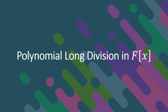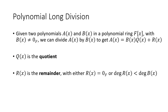This video reviews the process for polynomial long division in a polynomial ring with coefficients in a field. Polynomial long division starts with two polynomials, a of x and b of x, in a polynomial ring F brackets x.